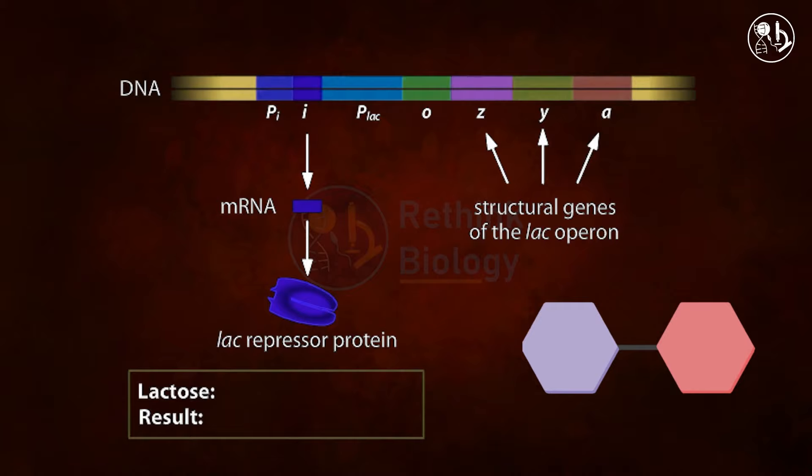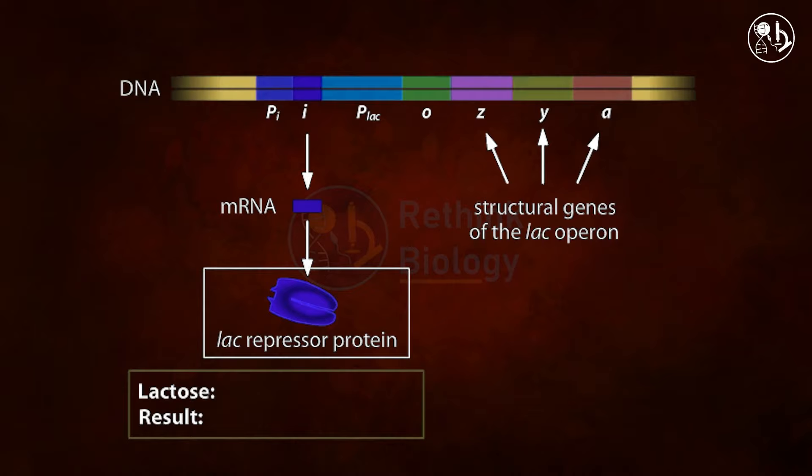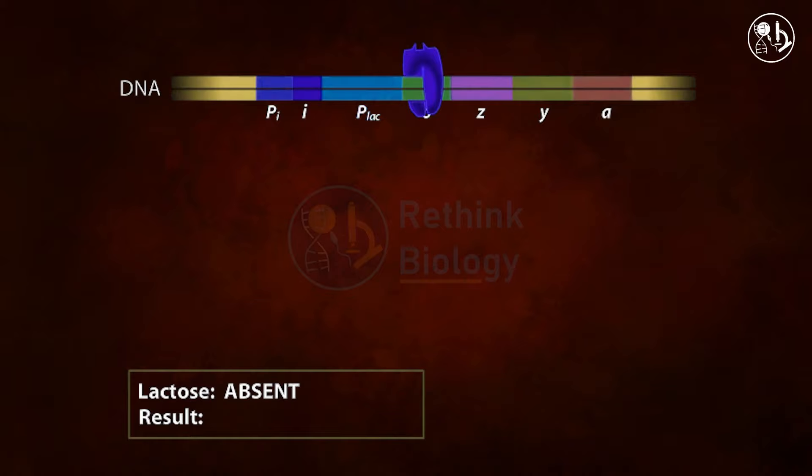We will learn how lactose activates the expression of these lactose-metabolizing genes through this animation. In both the absence and presence of lactose, the lac repressor protein — encoded by the lac I gene — is produced. The lac repressor attaches to the lac operator site in the absence of lactose.